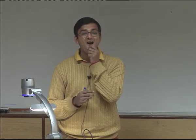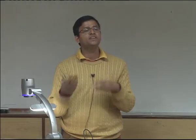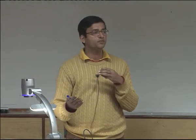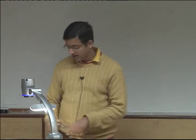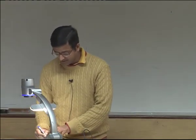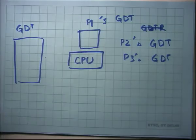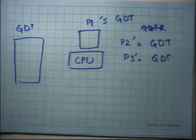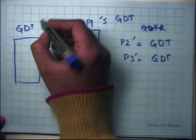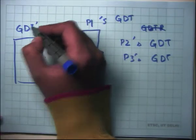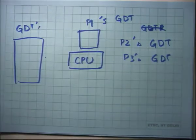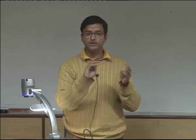Why do we need different GDTs for each process? It seems wasteful. Another way is to have just one GDT and each time a process is switched, simply change the entries in the GDT. The second way is obviously superior because we are not wasting space — we just have one GDT and manipulate the entries on each context switch.